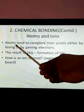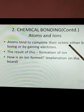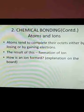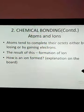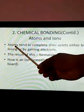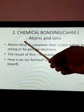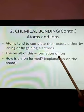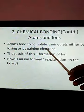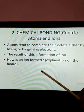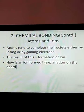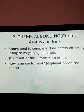Atoms tend to complete their octets either by losing or by gaining electrons. The result of this is the formation of ions. First, understand the meaning of this statement. They tend to complete their octets — octet means 8 electrons in the outermost shell. Either by losing or by gaining electrons, the result is the formation of ions. When atoms lose or gain, what results is known as an ion.